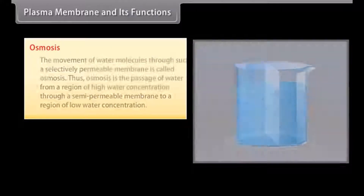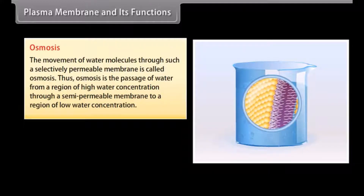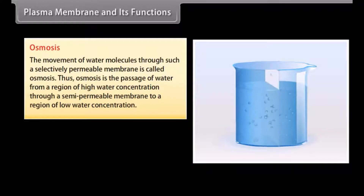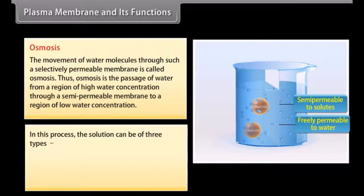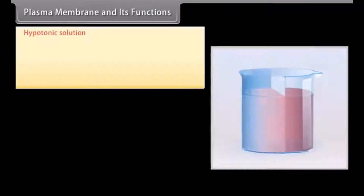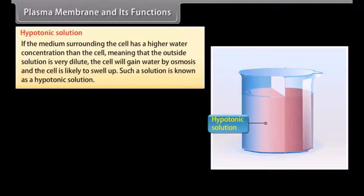Osmosis. The movement of water molecules through a selectively permeable membrane is called osmosis. Osmosis is the passage of water from a region of high water concentration through a semi-permeable membrane to a region of low water concentration. The solution can be of three types: hypertonic, hypotonic, or isotonic. If the medium surrounding the cell has a higher water concentration than the cell — meaning the outside solution is very dilute — the cell will gain water by osmosis and is likely to swell up. Such a solution is known as a hypotonic solution.